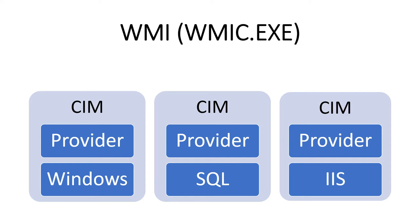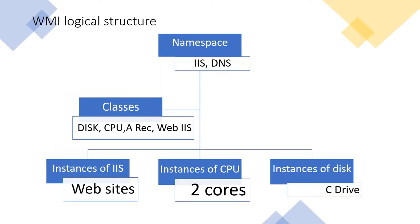Microsoft is using a standard technology — WMI — set at the top level, from which we can use this data in PowerShell. WMI has a very beautiful logical structure. At the top we have namespaces like IIS and DNS. If I am using IIS or creating an A record in DNS, and I want to see the CPU or disk — these are different classes.